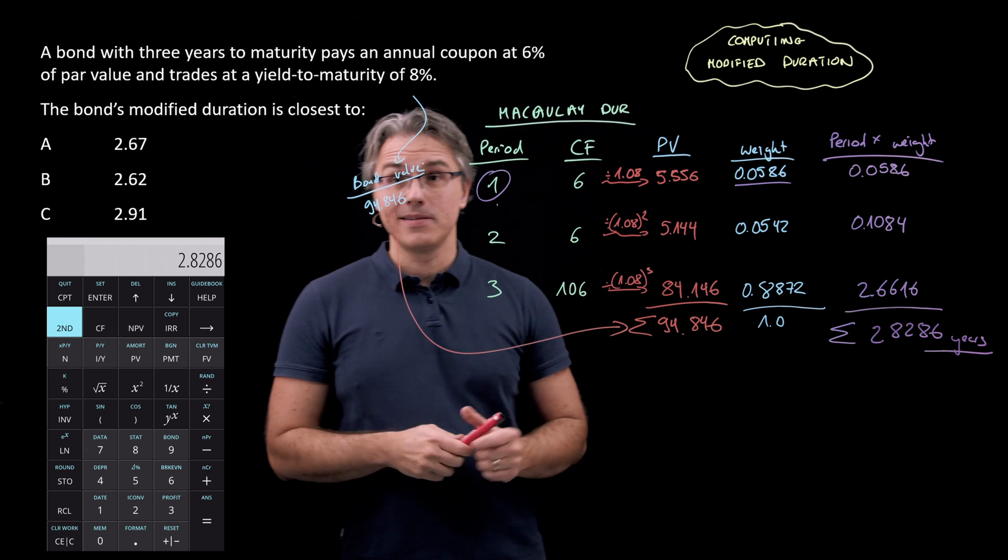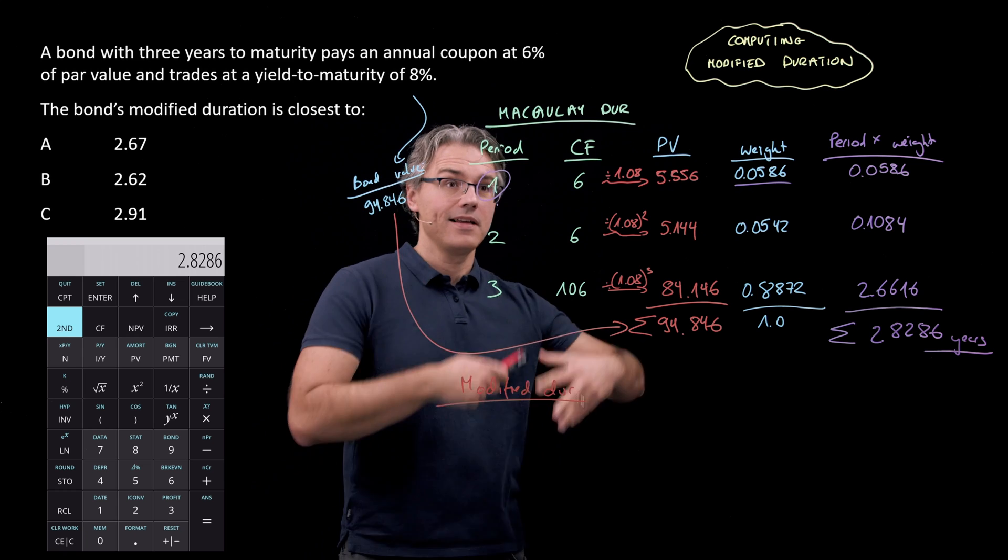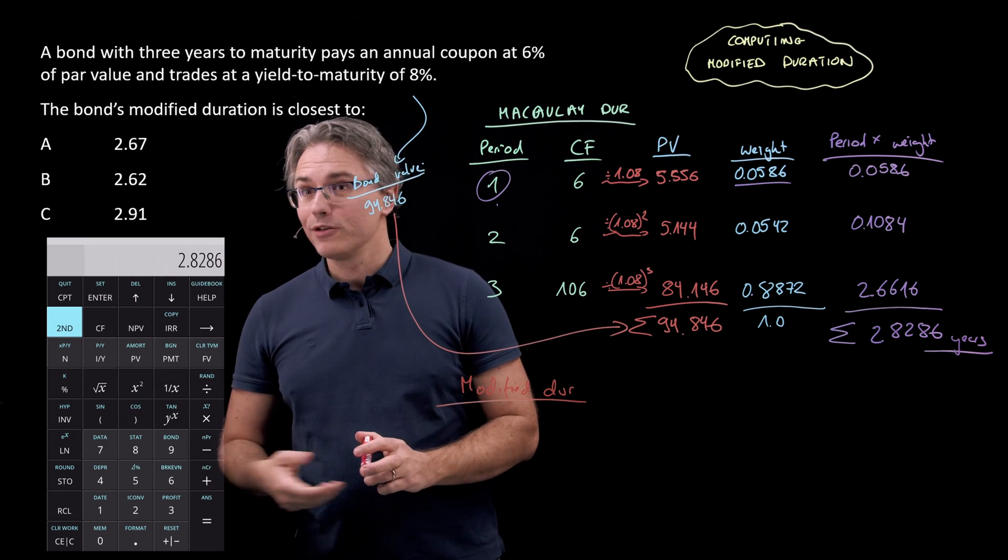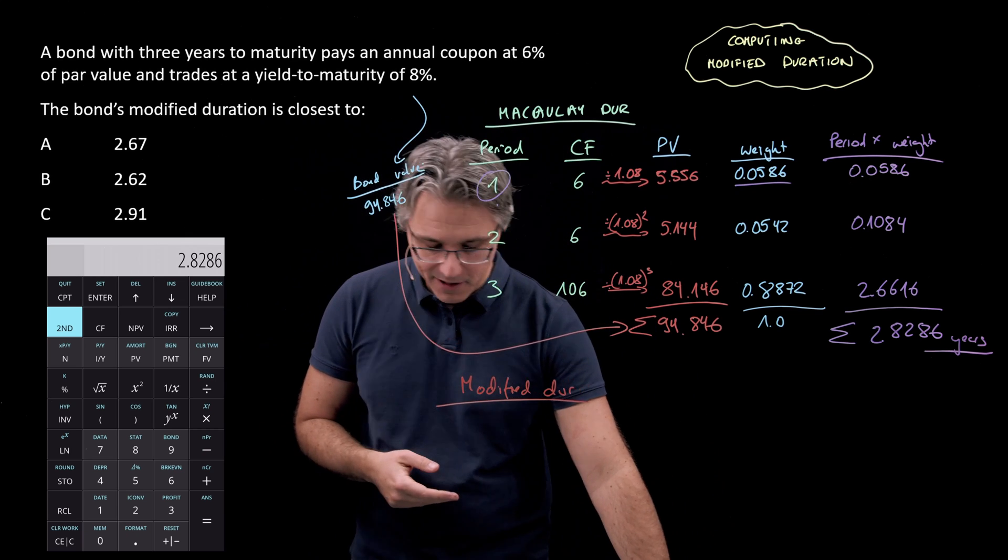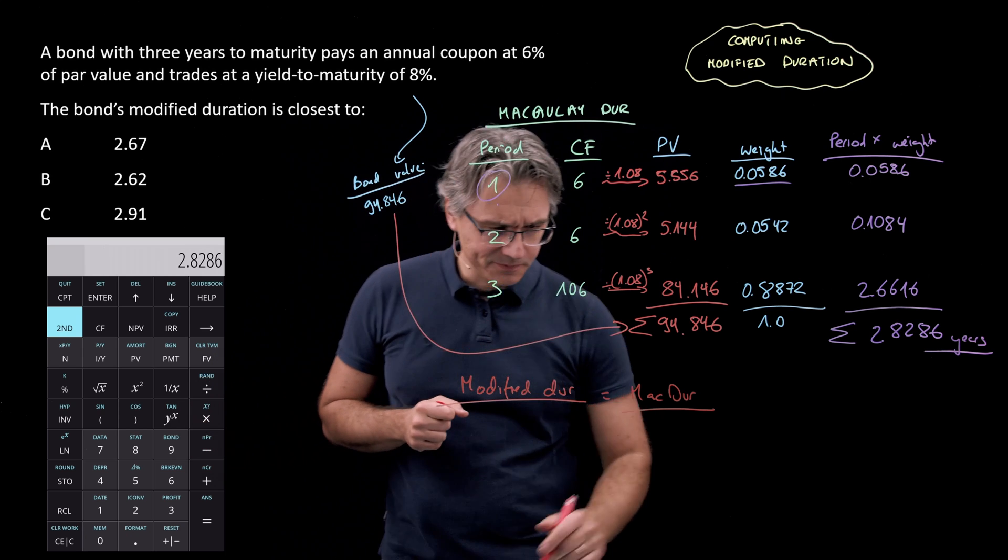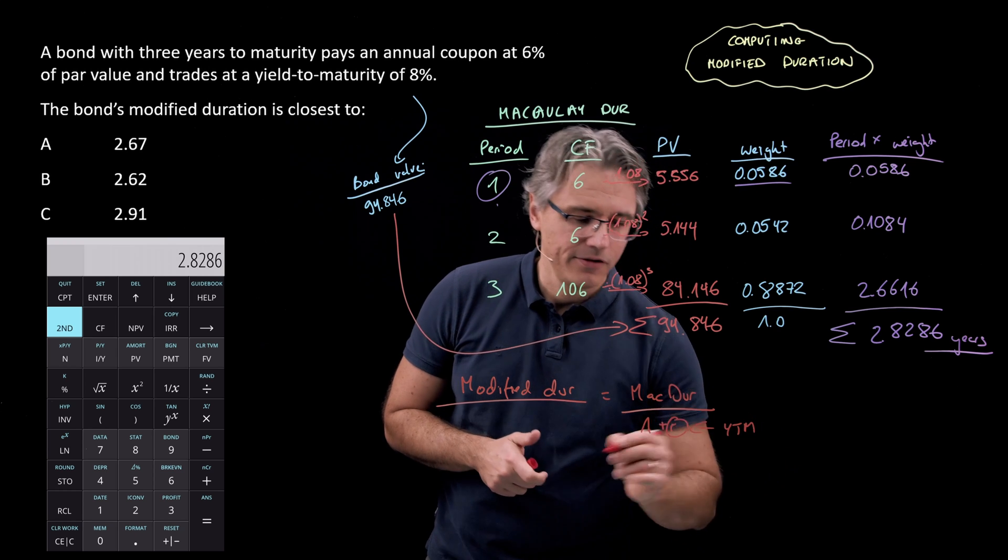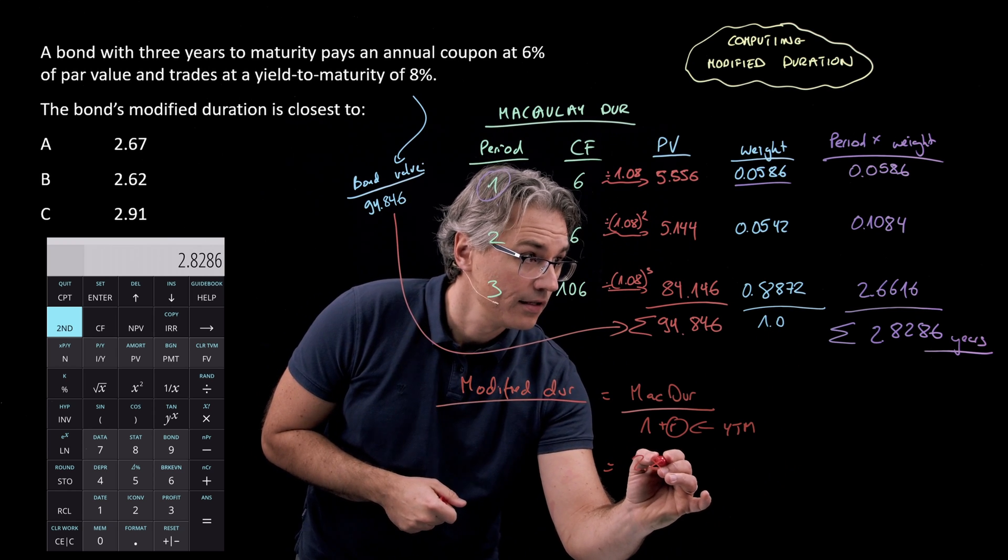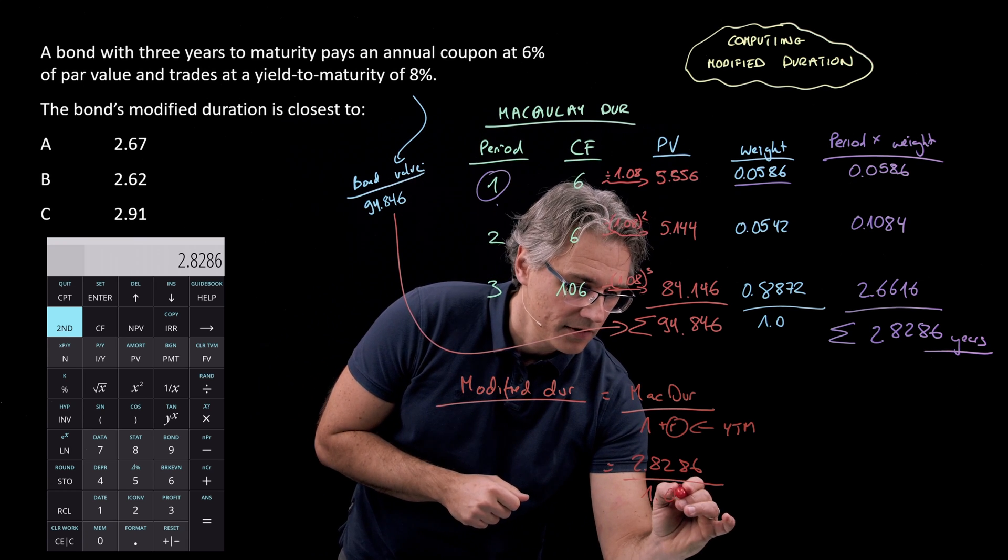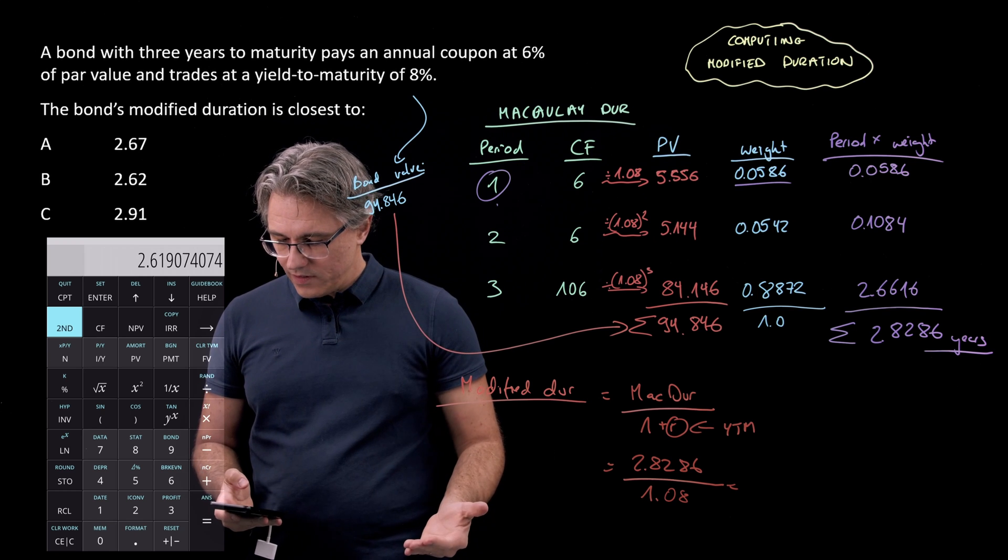However, Macaulay Duration alone is not as useful as something called modified Duration. And modified Duration is the one that's going to help us assess how sensitive a bond is to interest rate movement, something that we will be doing in follow-on questions in the future, and something you should be doing in your curriculum studies anyway. So modified Duration is taking the Macaulay Duration, what we computed just a moment ago, and dividing this by 1 plus R, where R is simply the yield to maturity on the bond. So I know this is 2.8286, and I'm dividing because I know the yield to maturity on the bond is 8%. So dividing by 1.08, let's see what the result is. 2.62 roughly.